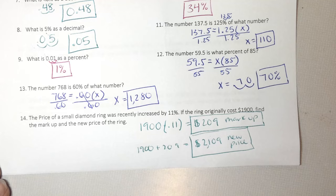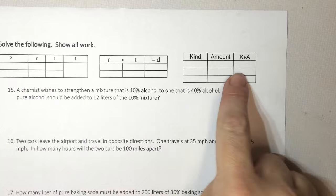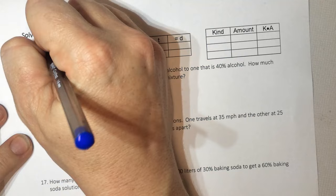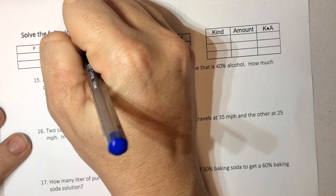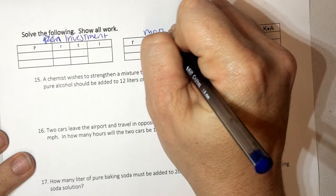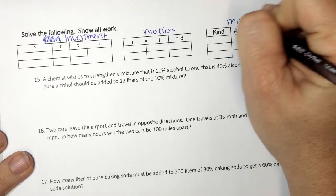Flip to the back. I will give you the tables, not per problem, but you'll be able to see these. So just a reminder, this one is investment. Rate times time equals distance. This is motion. And then kind times amount is mixture.